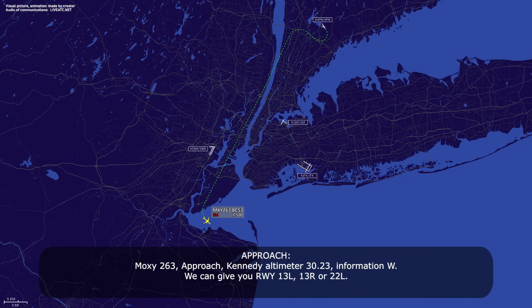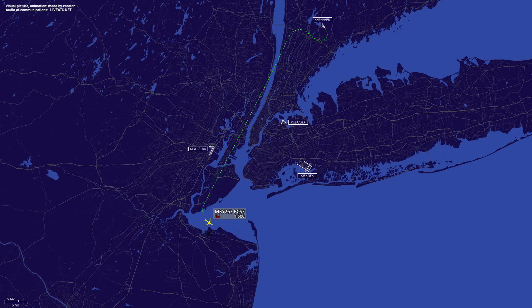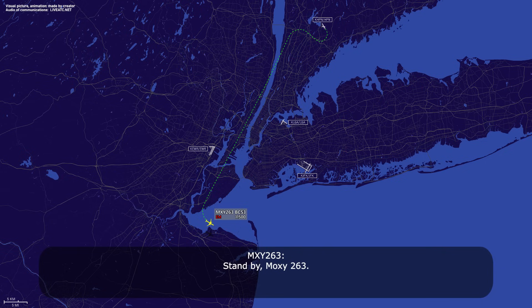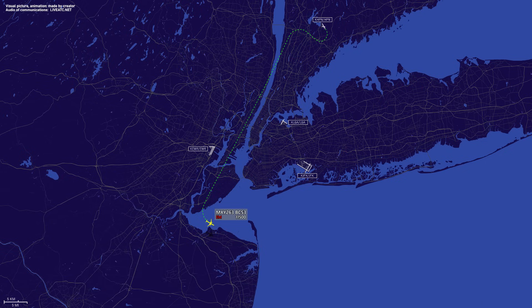Moxie 263, approach Kennedy, altimeter 3023, information Whiskey. We can give you runway 13 Left, 13 Right, or 22 Left. Standby, Moxie 263.